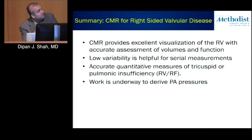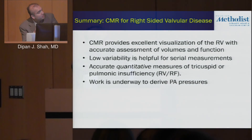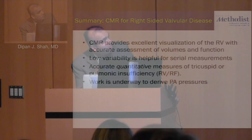In summary, CMR provides excellent visualization of the RV and accurate assessment of RV volumes and function, with low variability useful for serial measurements. It gives quantitative measures of tricuspid and pulmonic insufficiency. Pulmonary pressure assessment remains a work in progress.